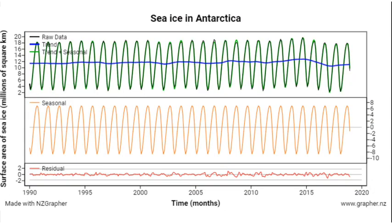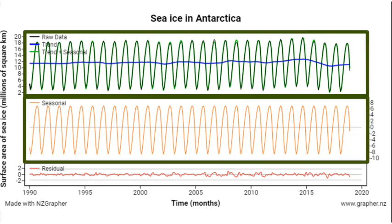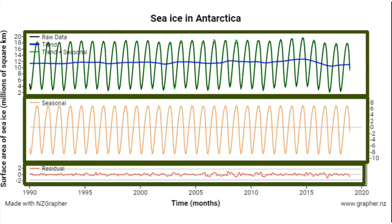If I look at the Antarctic data, same pattern. At the top we have our data with our trend line through the middle. Then they have extracted and removed that trend line and the seasonal component, and that has left us down the bottom with our residuals. So there is our recomposed graph.